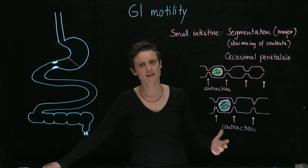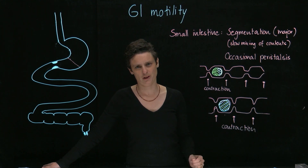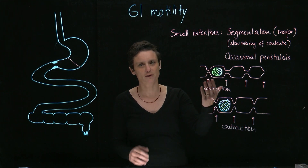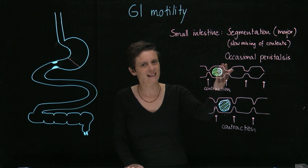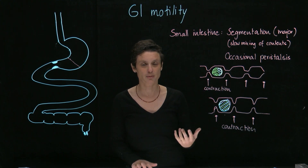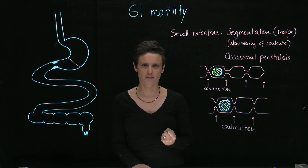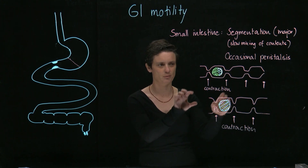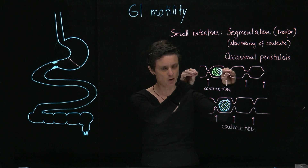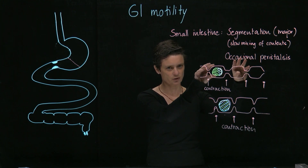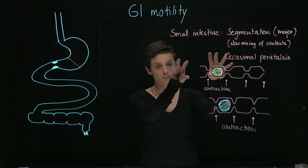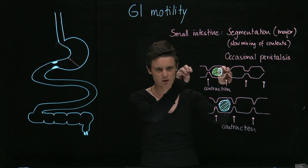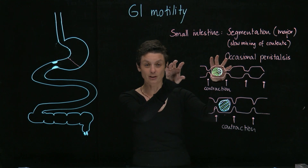Next we'll talk about the small intestine. The major job of the small intestine is to absorb nutrients. To do that, we want the contents to stay there for a while and mix well, so that the bolus has a lot of contact with epithelial cells and absorption can happen. The major mixing movement in GI motility is called segmentation. It works by having contractions at specific points, then contractions at different points, then returning to the original points — like a little washing machine — which facilitates good mixing of the contents.